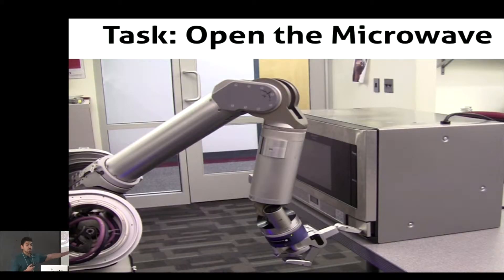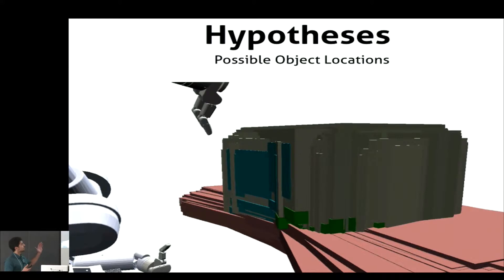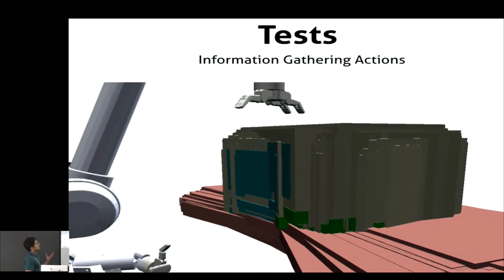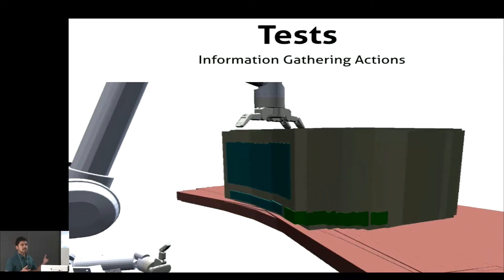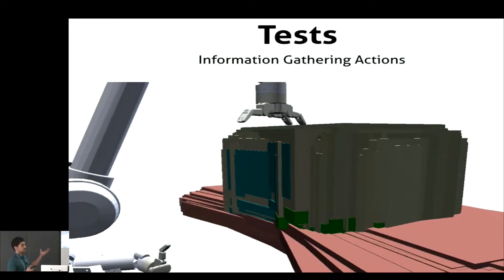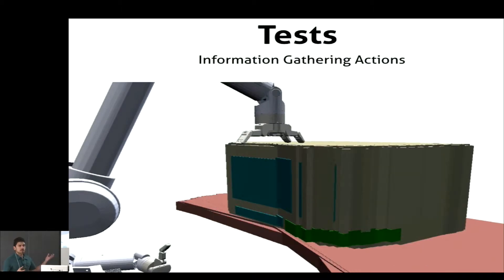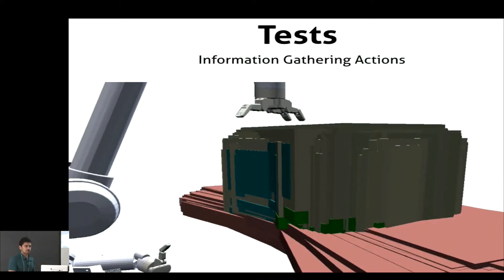Let's take the task of pushing the big button on the microwave to open it, and come up with a model of how to represent this uncertainty and how we're going to diminish it. We're going to represent our uncertainty with a large set of hypotheses, where each one is a location of the object. If you take a guarded move, you have tests where you can gather information. Executing the guarded move would make contact and let you update your distribution, or stopping at a different location would yield a different set of hypotheses.